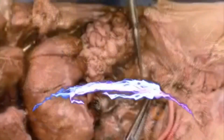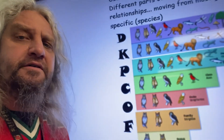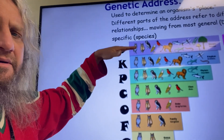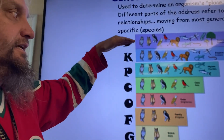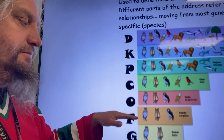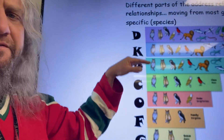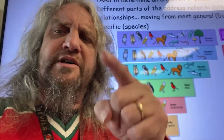We've been doing the Beaks of Finches lab and at the same time talking about taxonomy and classification — the different levels from the most general, the domain and the kingdom, to the most specific, the genus and species. Domain, kingdom, phylum, class, order, family, genus, and species. As you move down, you have fewer and fewer organisms that fit. But where do we fit? That's the question we're going to answer.